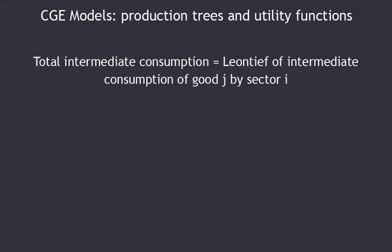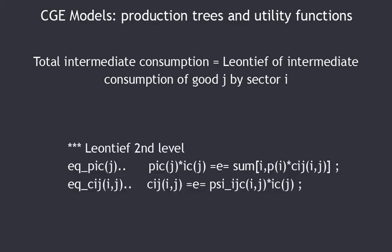There is a second level of Leontief relating total intermediate consumption of sector j and intermediate consumption of good i by sector j. The first equation is: PIC_j × IC_j equals the sum over i of Pi × Cij — the value of total intermediate consumption in sector j equals the sum of intermediate consumption of goods i by sector j. The second equation is Cij equals parameter Psi_Cij times IC_j, expressing demand of good i by sector j as a fixed proportion of total intermediate consumption.